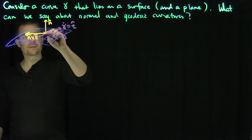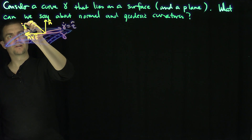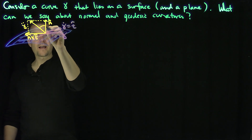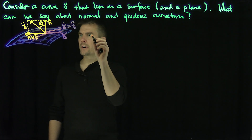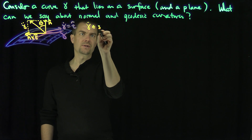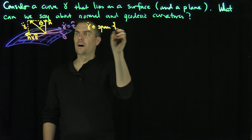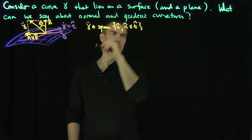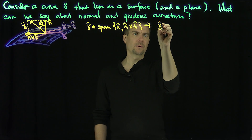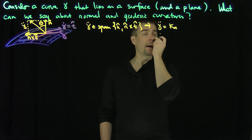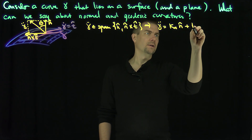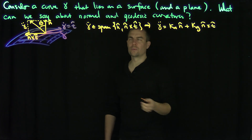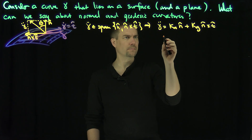My gamma double dot resides in this plane — so gamma double dot is in that plane generated by n-hat and n-hat cross t-hat. And I'm going to call this angle theta. So our configuration is that gamma double dot is in the span of n-hat and n-hat cross t-hat. That allows me to write gamma double dot as kappa_n times n-hat plus kappa_g times n-hat cross t-hat. These are the normal and geodesic curvatures.